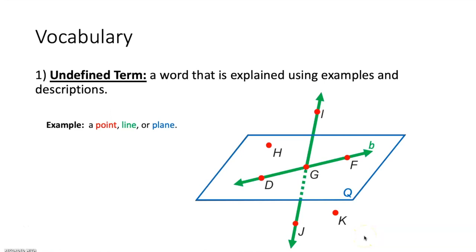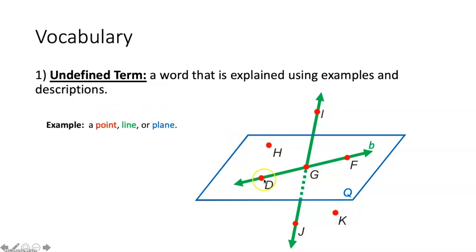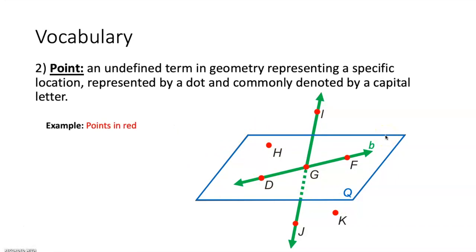First thing we're going to talk about is an undefined term. That's a word that is explained using examples and descriptions. In this particular lesson, we're going to be talking about three undefined terms: points, lines, and planes. Here you can see points in red, lines in green, and our plane in blue.